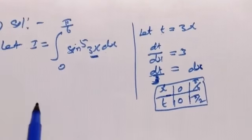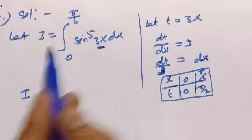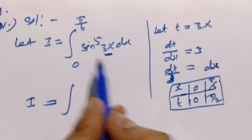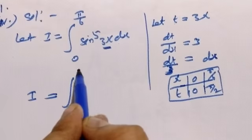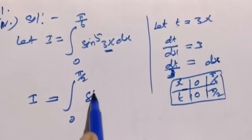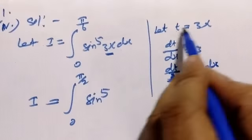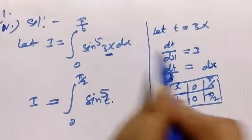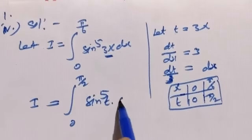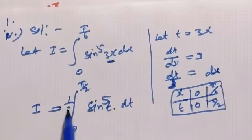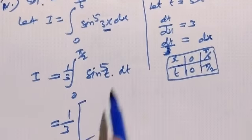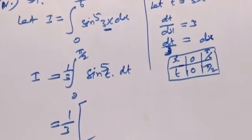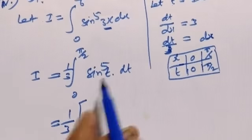I equals integral from 0 to 5π/2 of sin⁵(t) times (1/3) dt. So I = (1/3) integral from 0 to 5π/2 of sin⁵(t) dt. Now applying the reduction formula: I = (1/3) times (4/5) times (2/3) times 1.